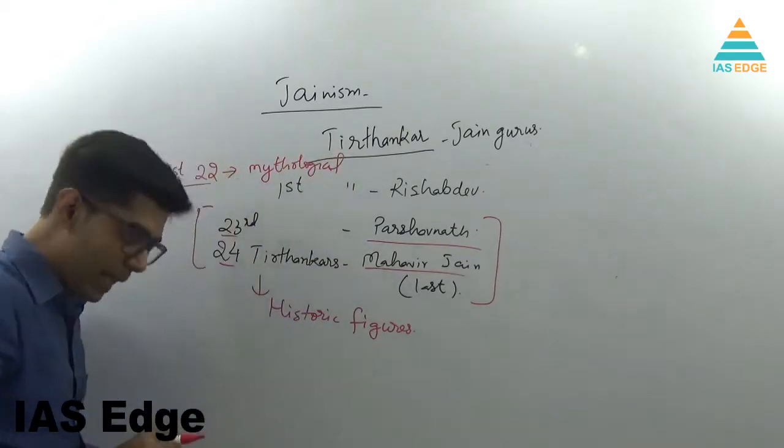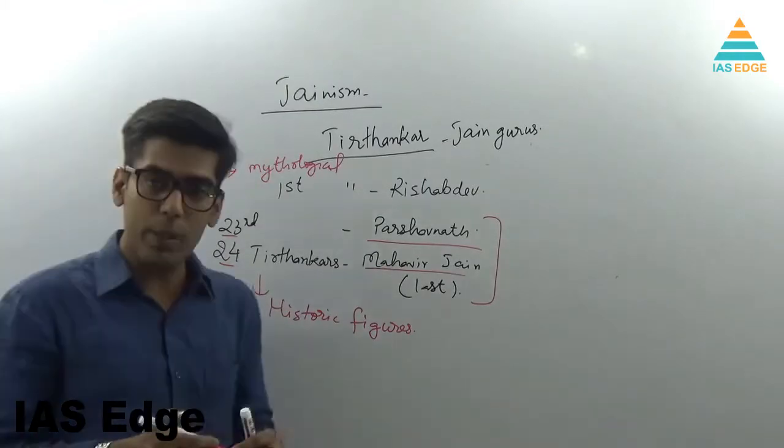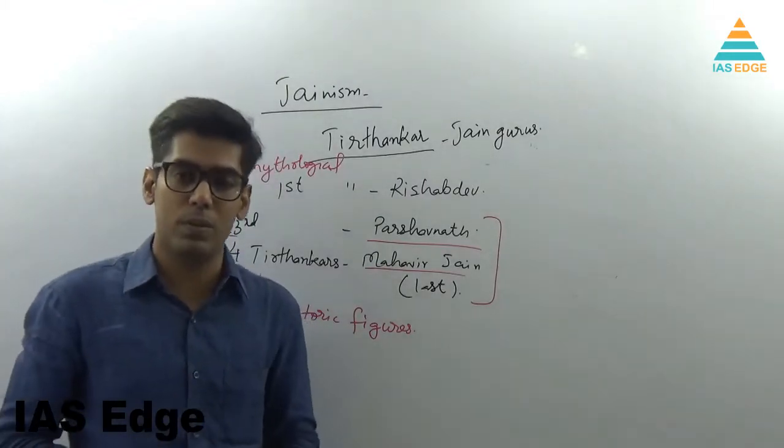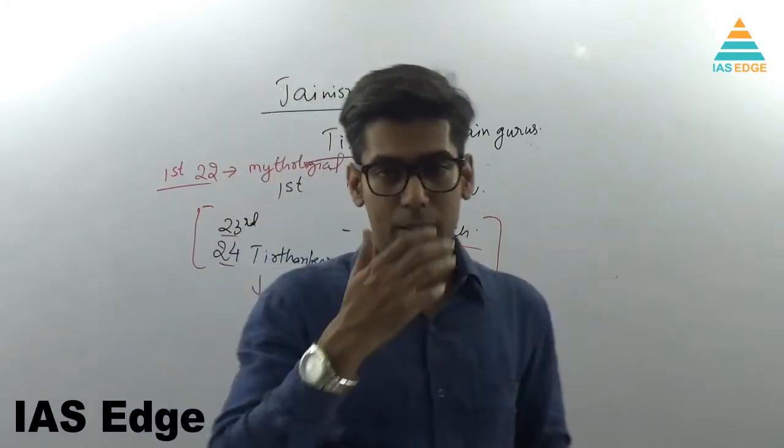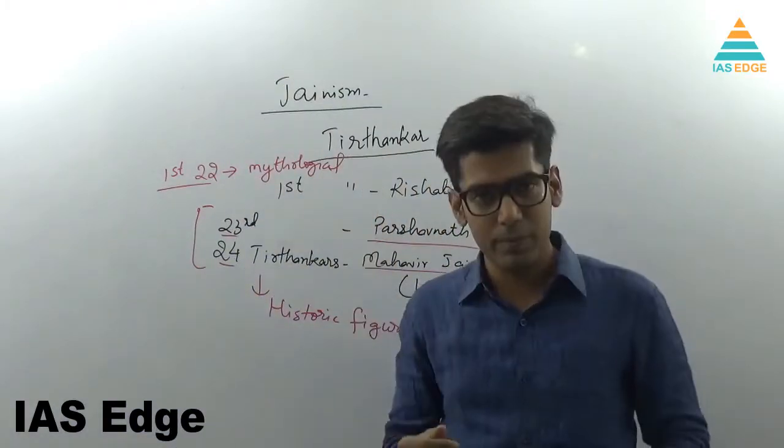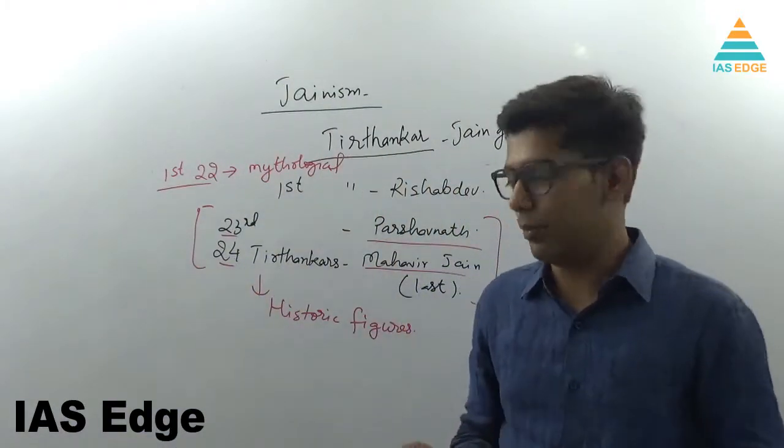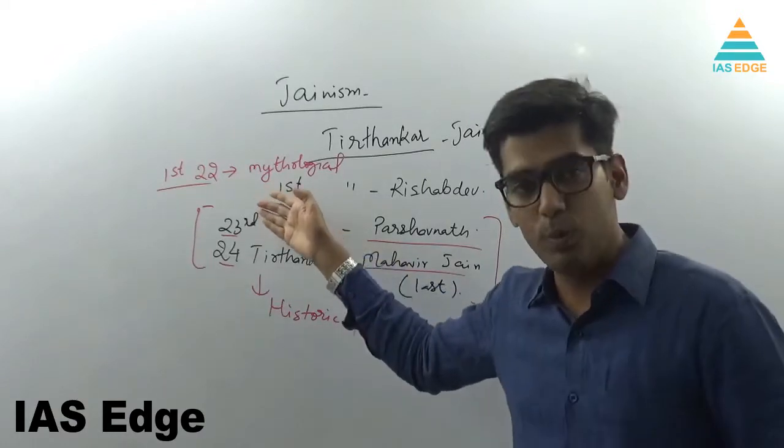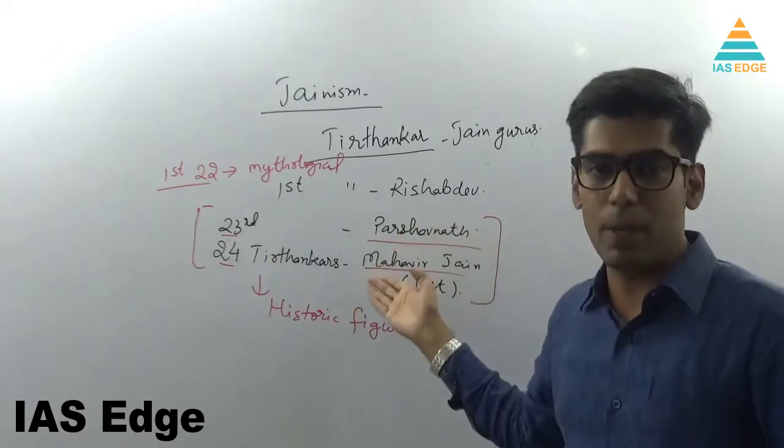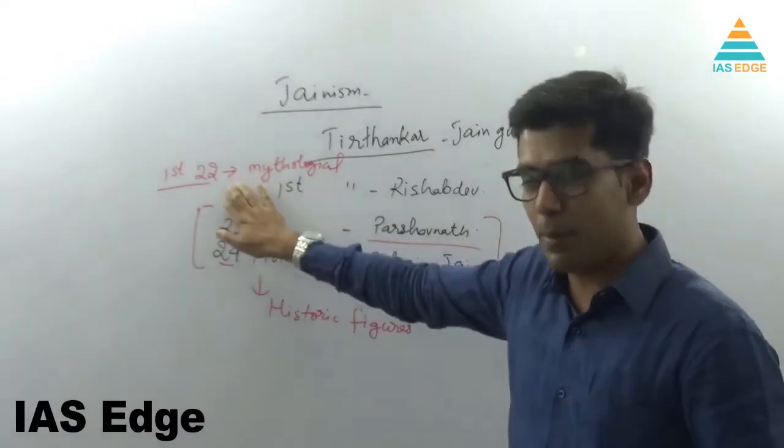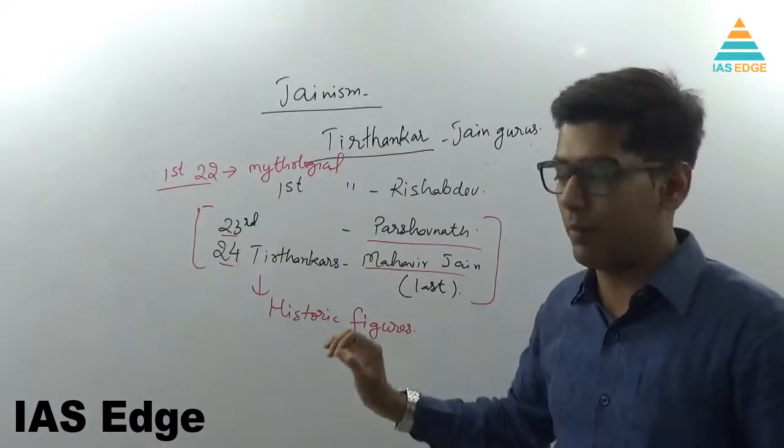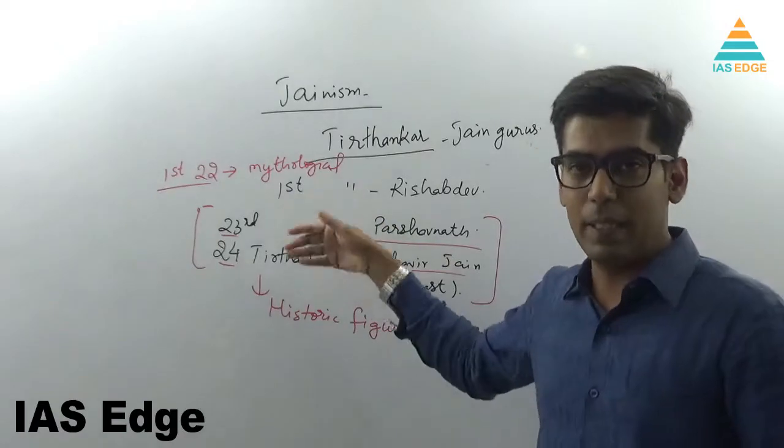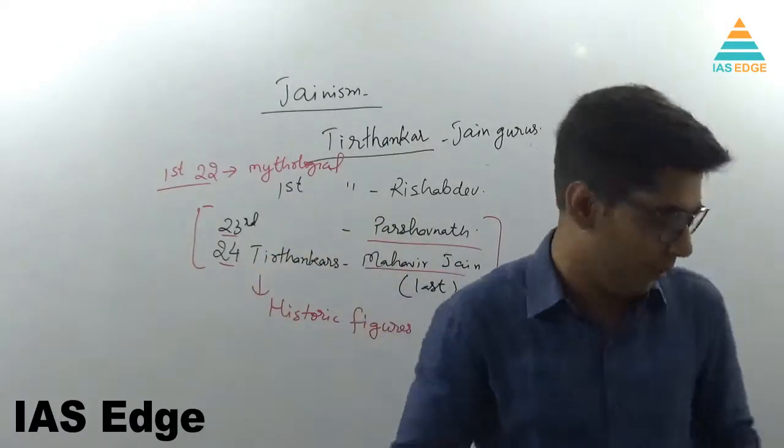This implies that there is no historic proof of first 22 Jain Tirthankars. Jains go by their belief, but history has proof of Parshvanath and Mahavir Jain. So first 22 are mythological. The last two are historic figures, which means they were born, they died, they lived. History has proof of them.